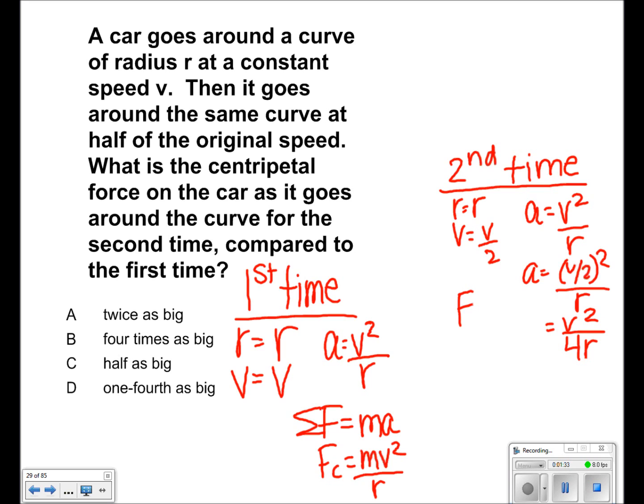Sum of forces equals mass times acceleration. So centripetal force equals, putting in our value for acceleration along with mass, mass times v squared over 4r.